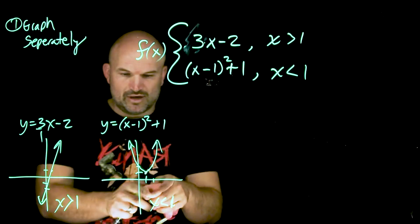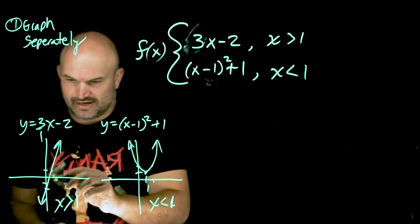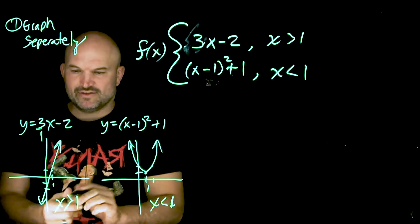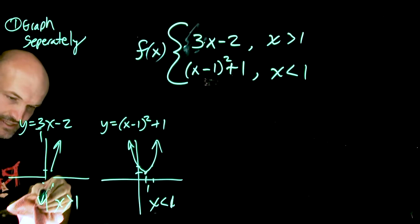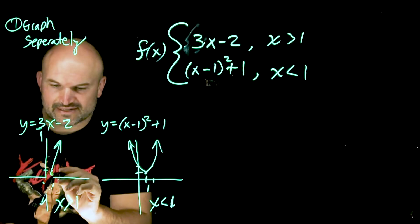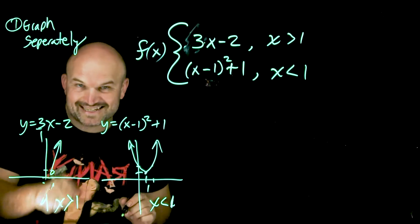So now, all we simply need to do is say, all right, well, x is less than 1 is right here, right? 1 is right there. So when x is greater than 1, that means everything to the left of 1 is not going to be a part of this graph. So I'm simply just going to go ahead and erase it. And we can put a nice little open circle there, because 1 is not defined.